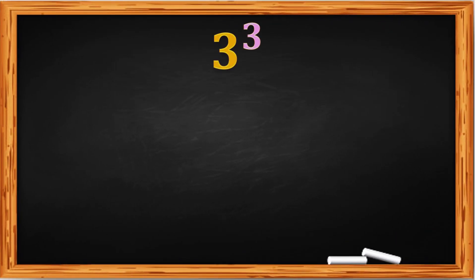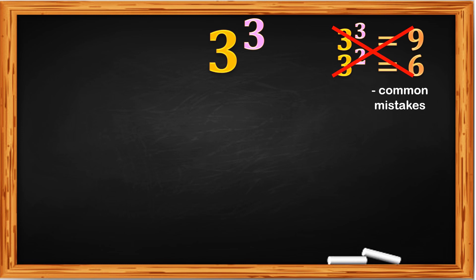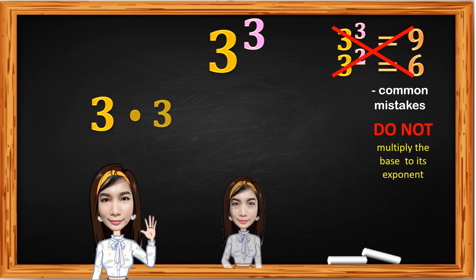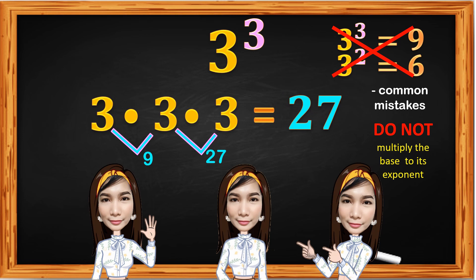Next, we have 3 cubed. Is 3 cubed equal to 9? What about 3 squared — is that equal to 6? That is incorrect, and a common mistake of students. Take note: do not multiply the base by its exponent. Let's see what is the value of 3 cubed by expanding: 3 times 3 times 3. Multiply one by one: 3 times 3 is 9, times 3 is 27. So the value of 3 cubed is 27.